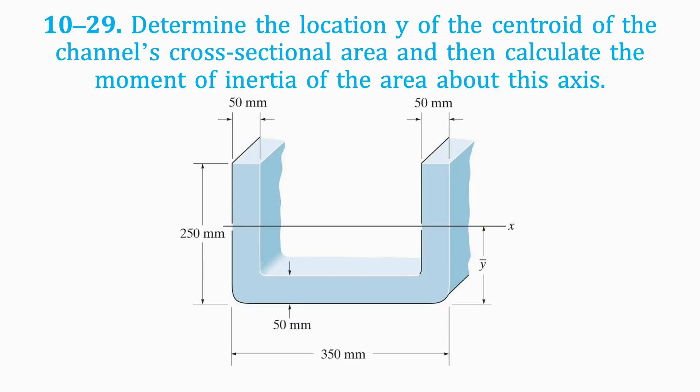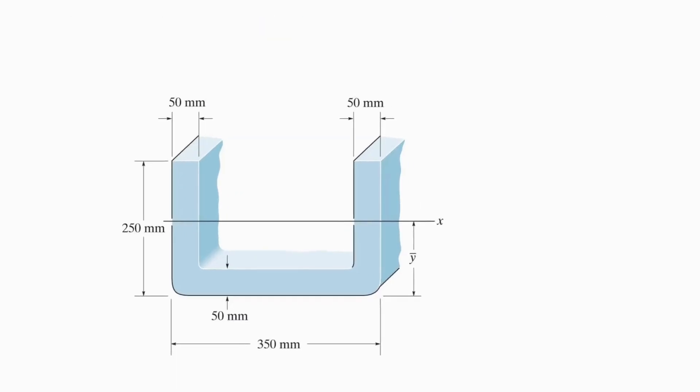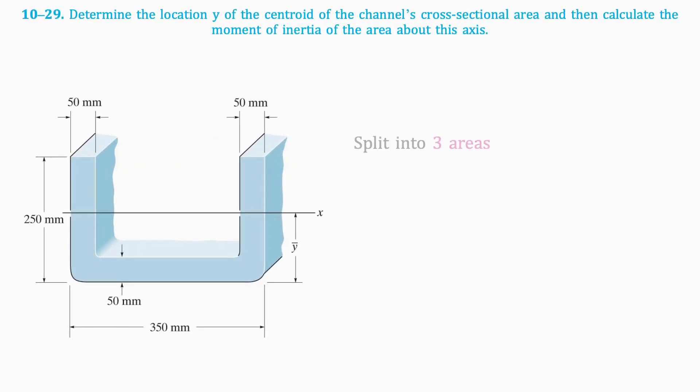Welcome back to Quick Static's Answers. Today's question is, find the centroid and moment of inertia. First, we'll split up the shape into three sections. Then we'll find the length of the second section, which is 250 mm.